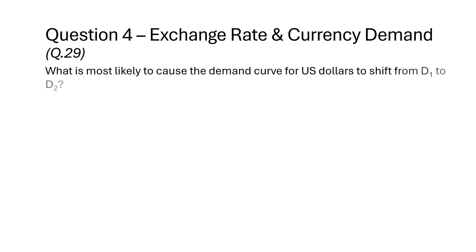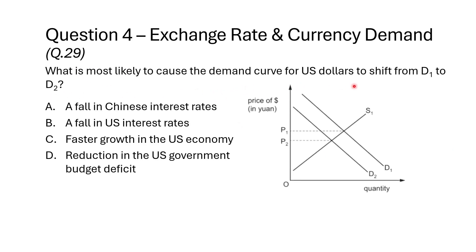This is question 29 from the paper. What is most likely to cause the demand curve for US dollars to shift from D1 to D2? The correct answer is B: a fall in US interest rates. When interest rates in the US fall, American financial assets become less attractive to foreign investors, who look for better returns elsewhere and won't need to convert their currency into US dollars. As a result, demand for US dollars decreases, shifting the demand curve leftward from D1 to D2.